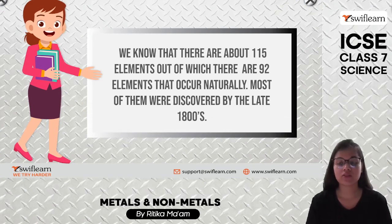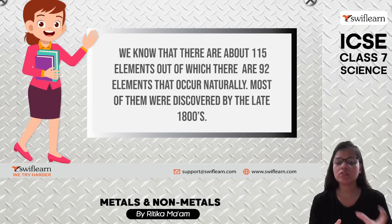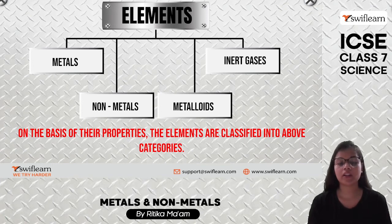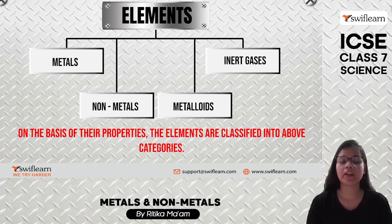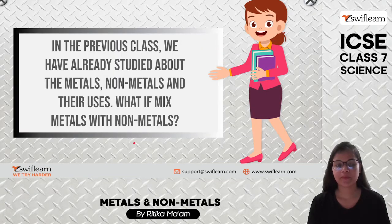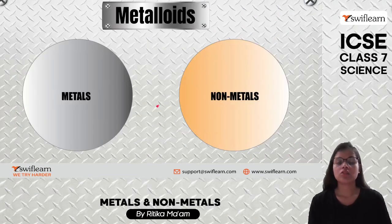There are about 115 known elements, and 92 of them occur naturally. Most elements were discovered by the late 1800s. Elements are classified into four categories: metals, non-metals, metalloids, and inert gases. We have already studied metals and non-metals, so today we focus on metalloids and inert gases.